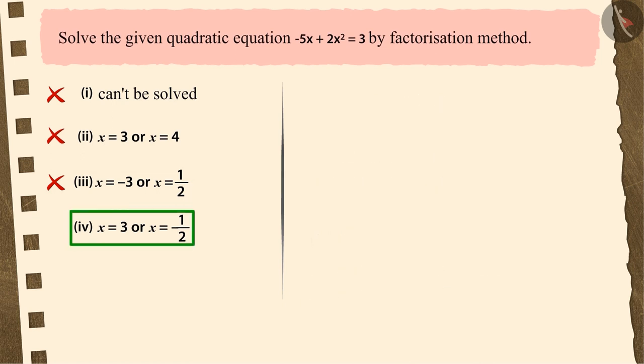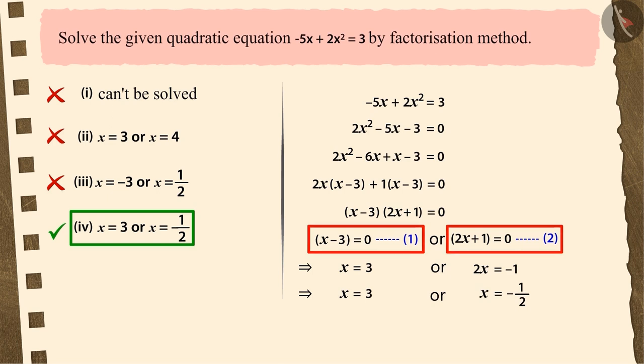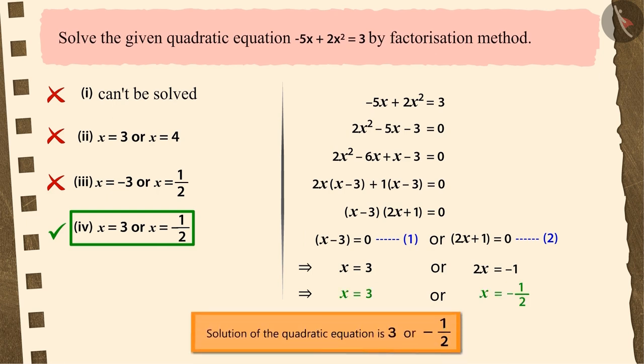If you chose option 4, then it's the correct answer. Putting each linear factor of this quadratic equation equal to zero and changing the signs while solving equations one and two, on solving it we get a unique solution for the quadratic equation.